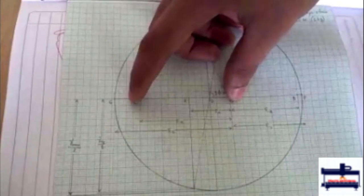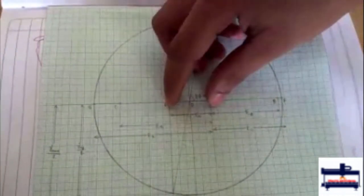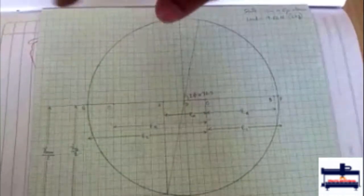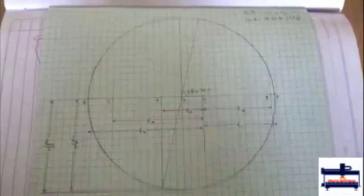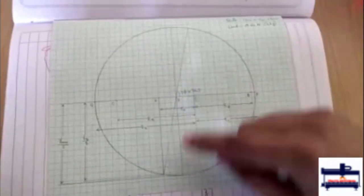After that we mark epsilon a, epsilon c and epsilon b all from point O. Epsilon a and epsilon c are towards the negative axis because they are negative values and epsilon b is positive so it is in the positive x direction.